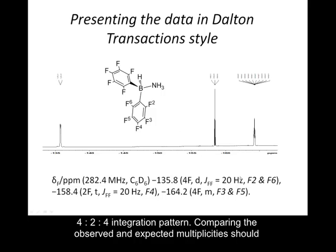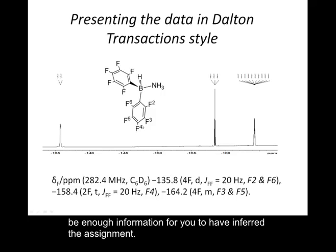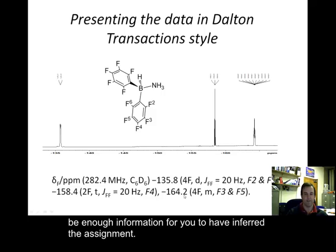Then, separated by a comma, we have the next signal at minus 158.4 ppm: intensity 2 fluorines, a triplet, coupling constant 20 Hz, assigned to F4. Finally, there is a resonance at minus 164.2 ppm: four fluorines, a multiplet, assigned to F3 and F5, the meta-fluorines.